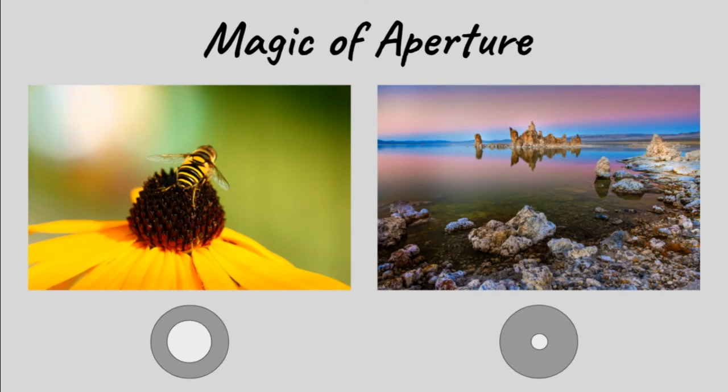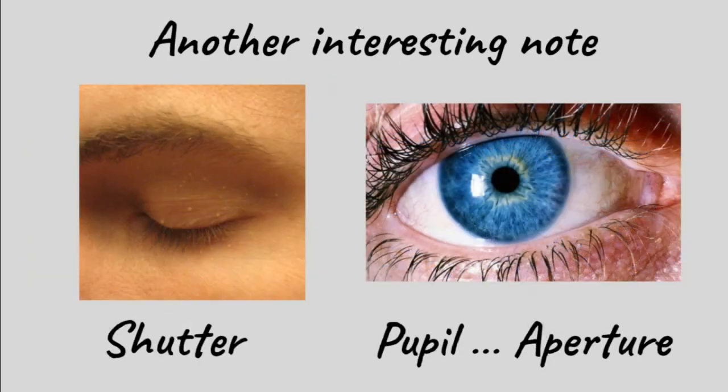So aperture, along with controlling amount of light entering a camera, also controls how much of a picture is in focus or how much of it is blurry.